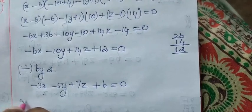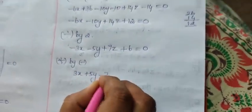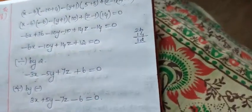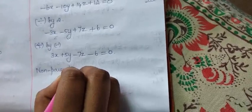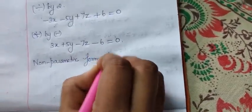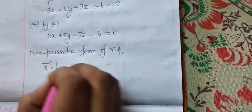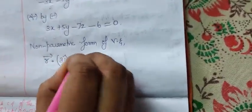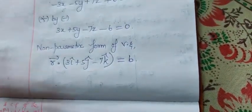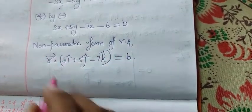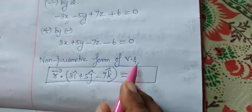Multiplying throughout by minus one: 3x + 5y − 7z − 6 = 0. So the Cartesian equation is 3x + 5y − 7z − 6 = 0. Now for the non-parametric form of vector equation: r vector dot (3i + 5j − 7k) = 6. Since they gave the vector equation directly, we derive the non-parametric form from the Cartesian equation answer.